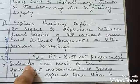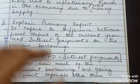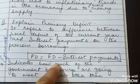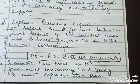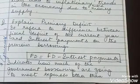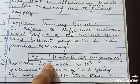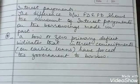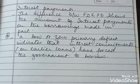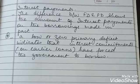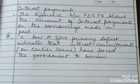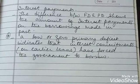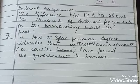The third type of deficit is the primary deficit. It is the difference between the fiscal deficit of the current year and the interest payments on previous borrowings. It tells us how much the government is borrowing just to meet its interest obligations. A very low or zero primary deficit is not good — it indicates that the government is being forced to borrow in order to meet its interest commitments.